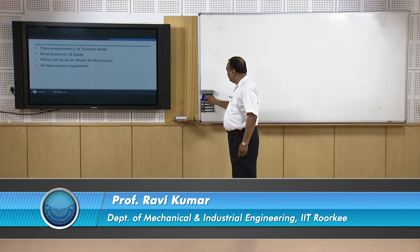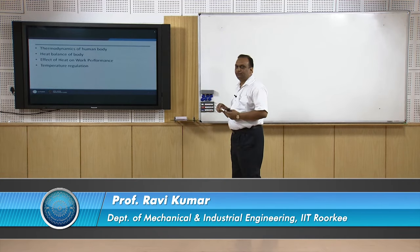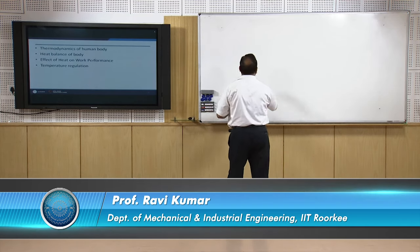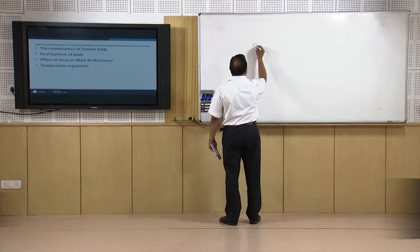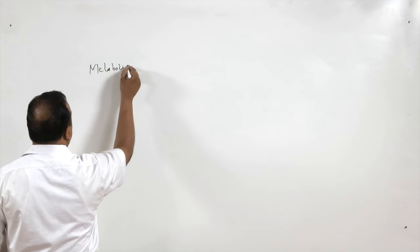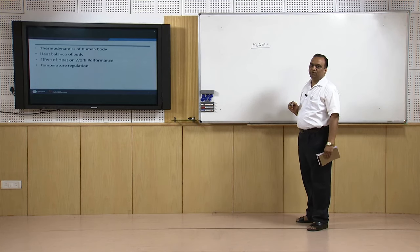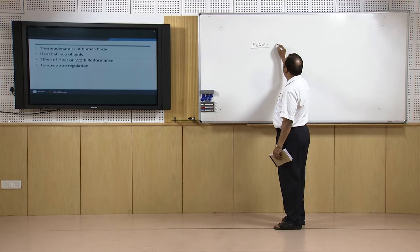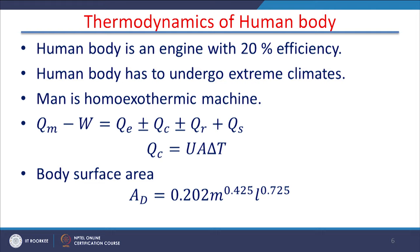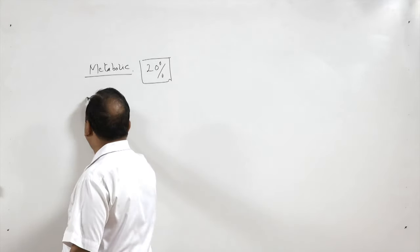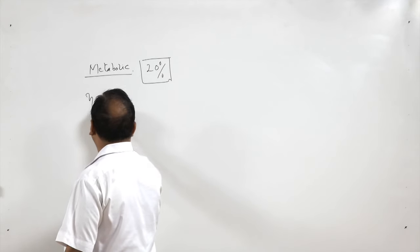The energy we draw to do work is through metabolic reactions. Out of these reactions, energy is evolved and approximately 20 percent of this energy is used for doing the mechanical work or external work. So if we consider our body as an engine, the efficiency of our body is 20 percent.